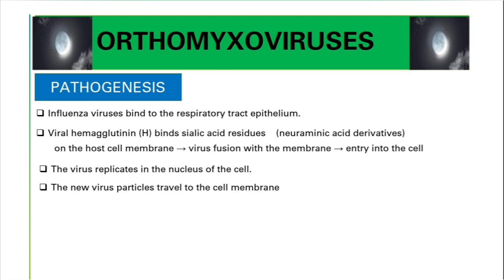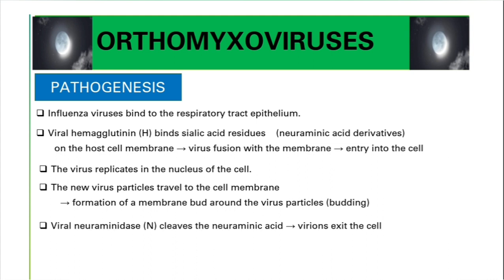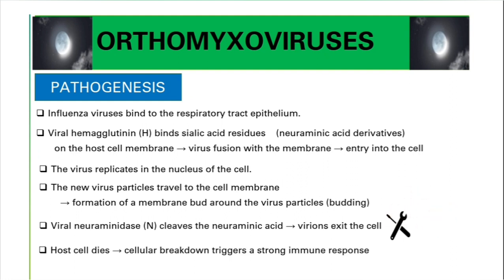The virus then replicates in the nucleus of the cell. After synthesizing new viral particles, they move to the cell membrane and form buds — exiting the host cell by budding. However, they need neuraminidase to cleave the neuraminic acid so the virions can exit. The host cell then dies, and cell death releases triggers of the immune response.